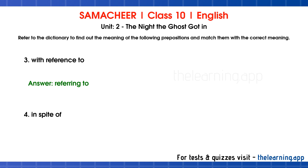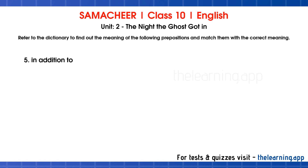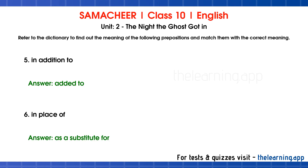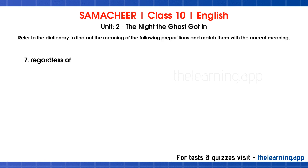Question 4: In spite of. Correct answer is: irrespective of. Question 5: In addition to. Correct answer is: added to. Question 6: In place of. Correct answer is: as a substitute for. Question 7: Regardless of. Correct answer is: disregarding the difficulty.